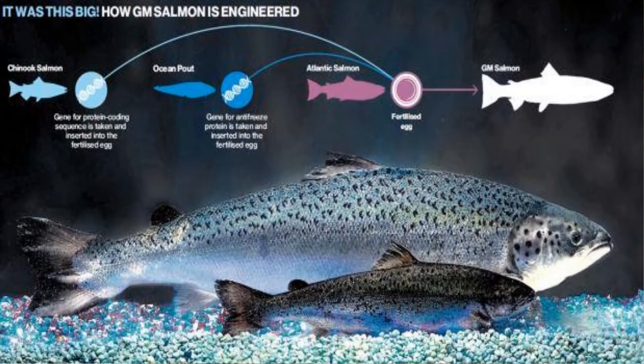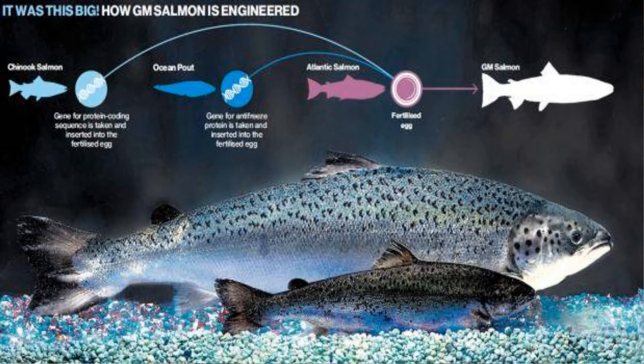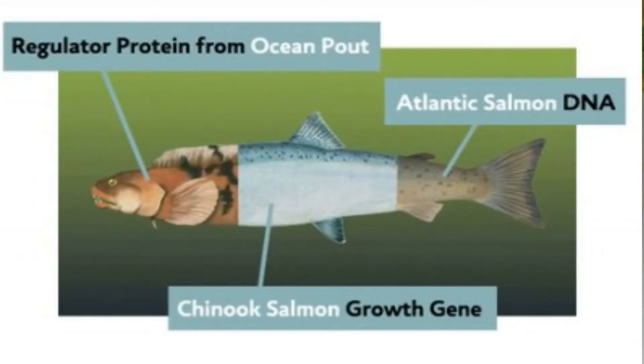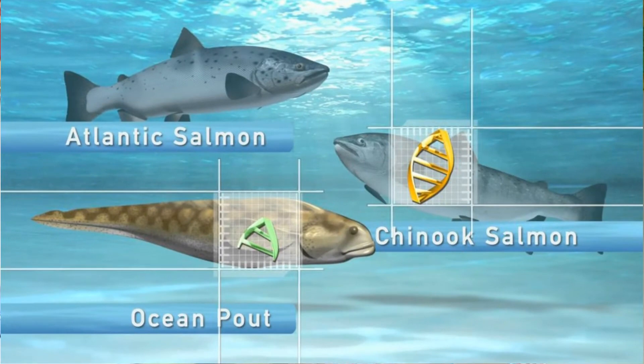Genetically modified animals for food production are much rarer than crop plants. An example is the GM Atlantic salmon developed in the USA and Canada. A growth hormone regulating gene from a Pacific Chinook salmon and a promoter from another species of fish — an ocean pout — were injected into a fertilized egg of an Atlantic salmon, producing growth hormone throughout the year.